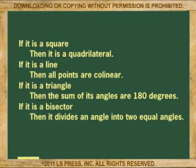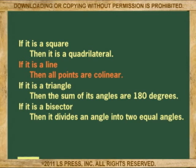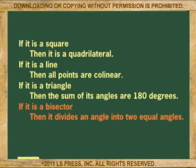What you see here now are all conditional statements with a valid hypothesis. If it is a square, then it is a quadrilateral. If it is a line, then all points are collinear. If it is a triangle, then the sum of its angles are 180 degrees. If it is a bisector, then it divides an angle into two equal angles.